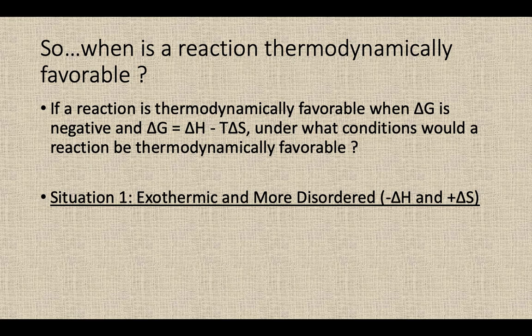We're going to look at four situations. Situation number one is where the reaction is exothermic and more disordered. It's releasing heat energy out into the surroundings — a negative delta H — and it's becoming more disordered. Maybe it goes from two moles of reactants to six moles of products, or maybe it starts as a solid and turns into a gas. If you have a combination of a reaction that's exothermic and becoming more disordered, and you plug that into the delta G equals delta H minus T delta S equation.